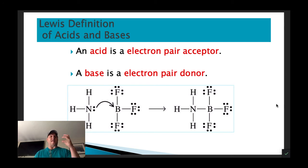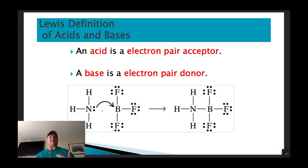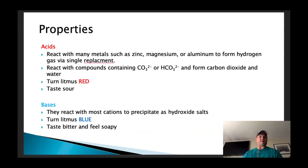The last definition is the Lewis acid or base. Acids accept an electron pair; bases donate an electron pair. For example, in the reaction of NH₃ with boron trifluoride, NH₃ donates its lone pair of electrons to form a coordinate covalent bond — nitrogen does all the donating. We're not going to focus much on Lewis acids and bases; they come up more in the next level of chemistry.